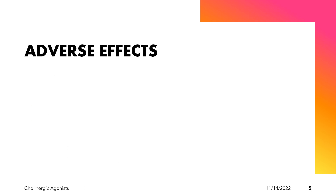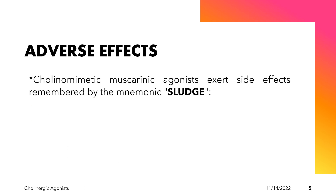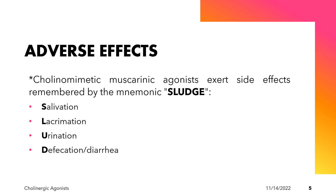The cholinomimetic muscarinic agonist exerts side effects remembered by the mnemonic SLUDGE. This stands for salivation, lacrimation, urination, defecation or diarrhea, and gastric emptying. These signs are the same as the effects of the parasympathetic nervous system.